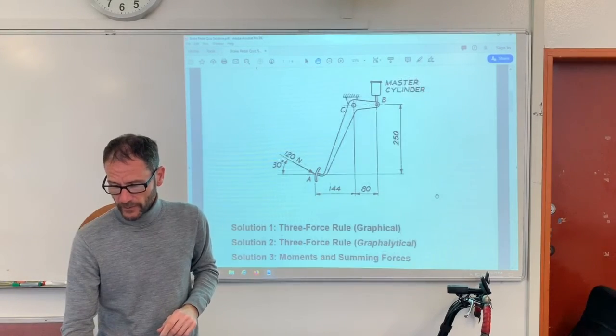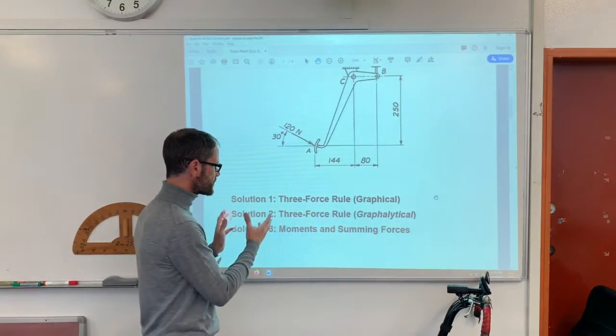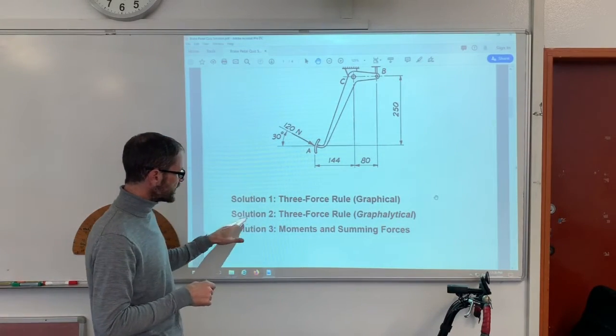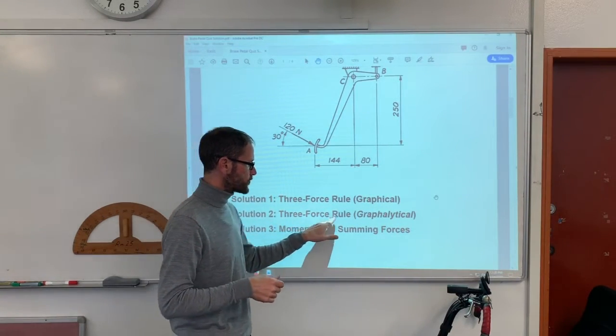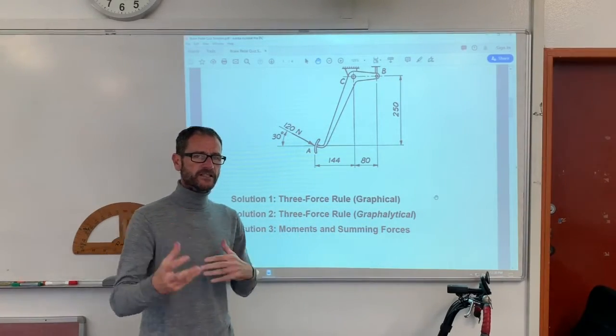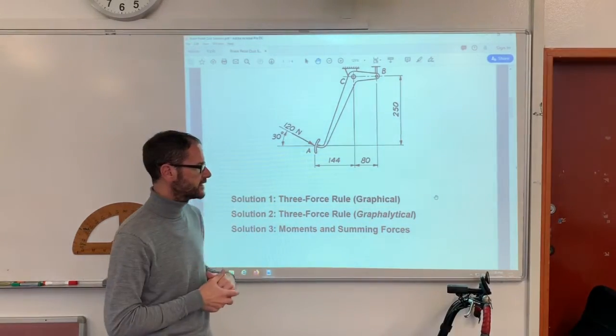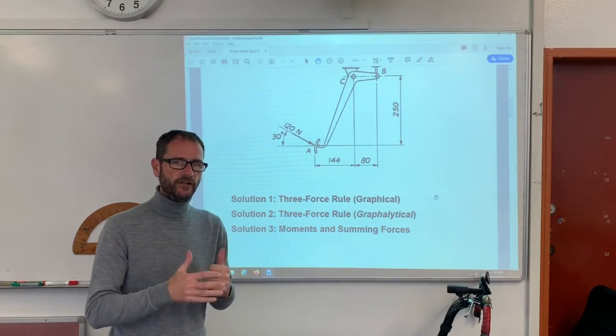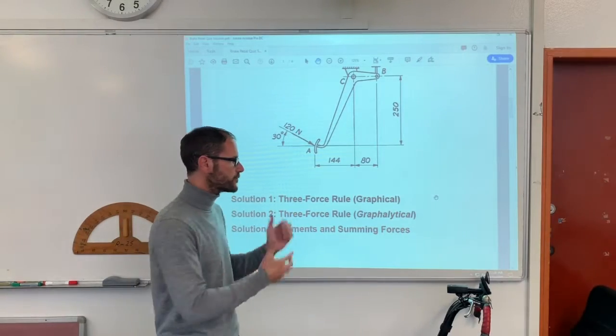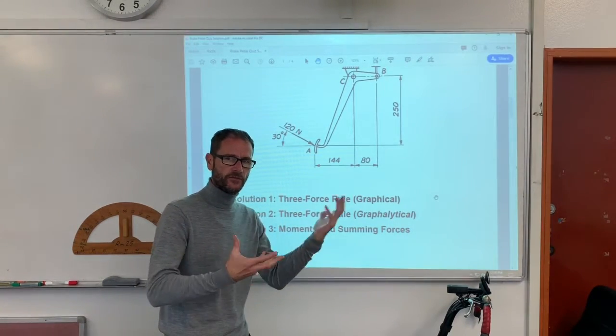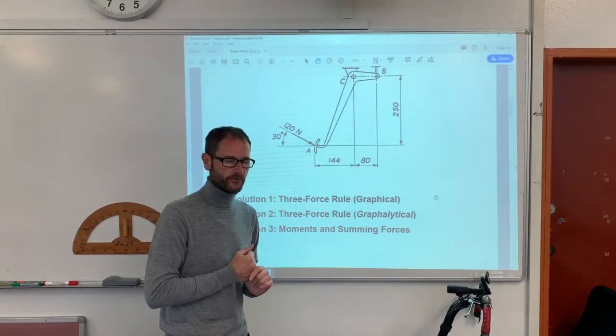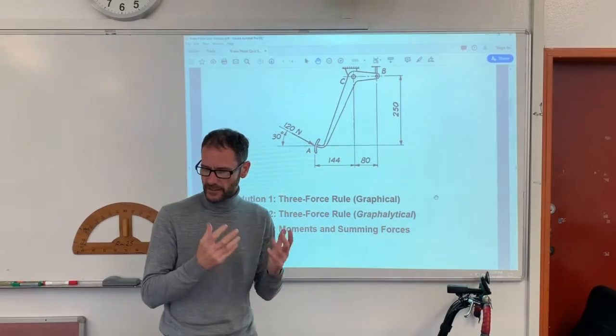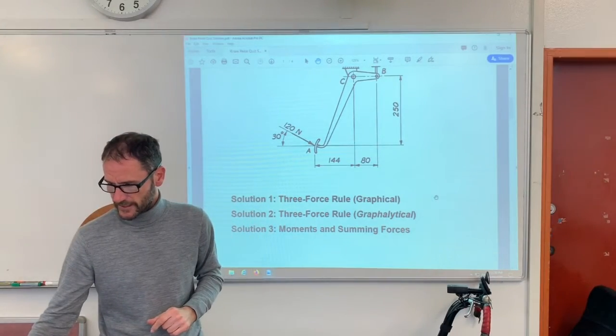Now, there are three ways we can do this. First off, we can solve it using the three force rule, using graphical methods. The second method I'm going to show you is the three force rule, and I've called it grapholitical. Because there's a mixture of graphical and analytical here. And you'll probably remember we've already done some of those from our concurrent forces booklet, where we actually use the protractor measuring angle of the third force, and then we use the sine rule. And solution three is moments and summing forces. So let's go through all of these and see how we go.